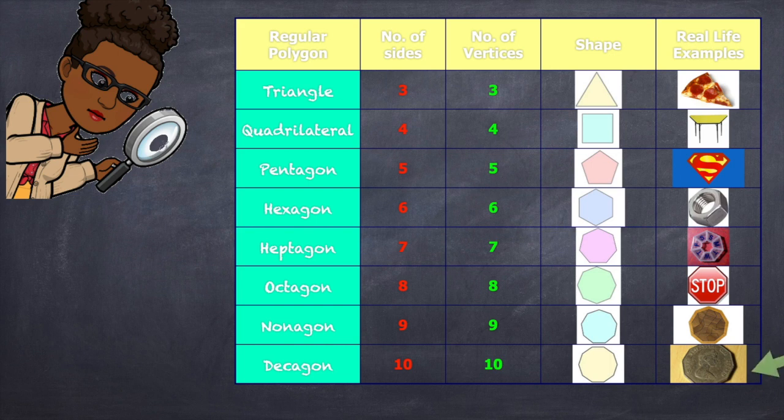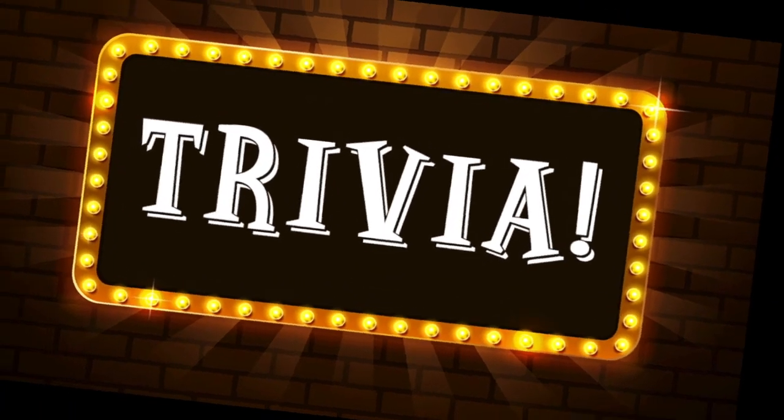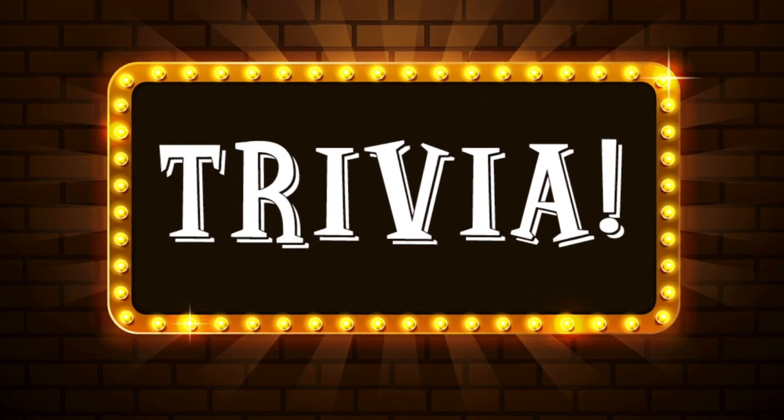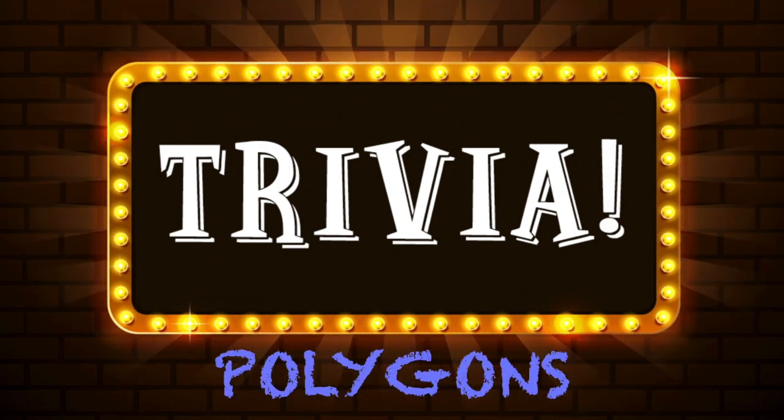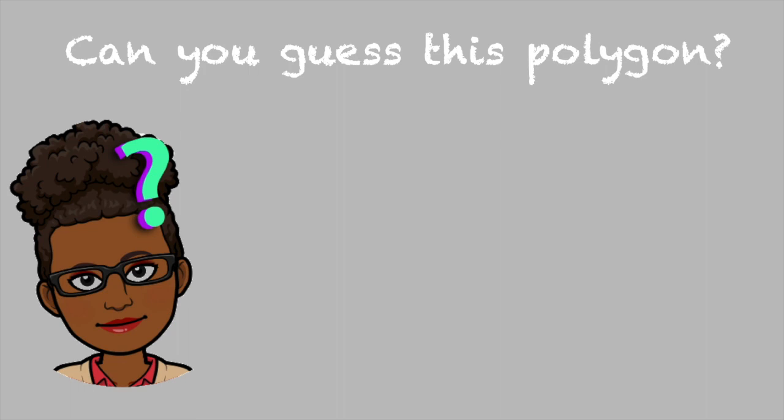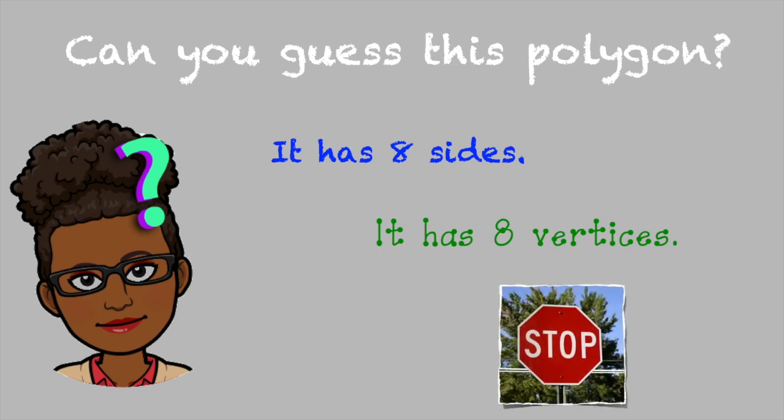Well, I hope you were paying attention because it's trivia time. And our category for the day is polygons. Can you guess these polygons? Can you guess this polygon? It has eight sides, it has eight vertices, and it looks something like this. Well, if you said octagon, you rock. Good job guys.